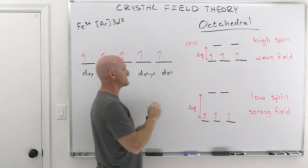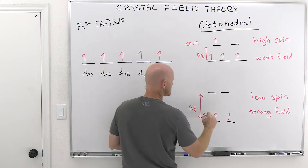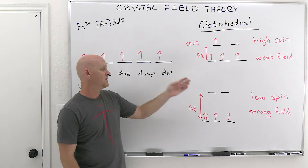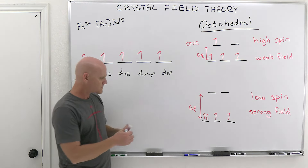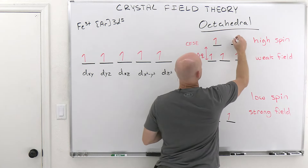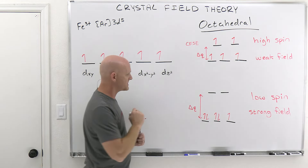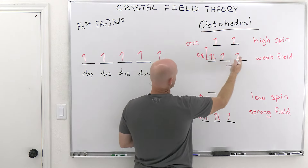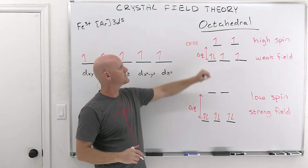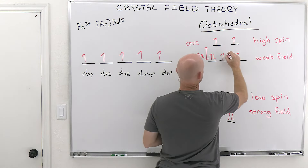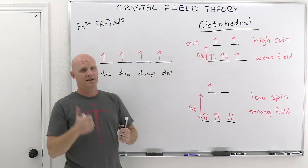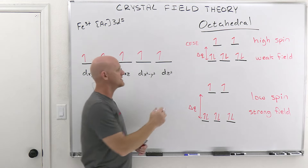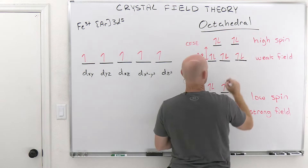It's not until the 4th d electron that you can tell the difference: weak field/high spin places it in the upper set (4 unpaired), while low spin pairs it down low (2 unpaired). At d⁵: 5 unpaired (high spin) vs. 1 unpaired (low spin). At d⁶: 4 unpaired (high spin) vs. 0 unpaired (low spin). At d⁷: 3 unpaired (high spin) vs. 1 unpaired (low spin). At d⁸, d⁹, and d¹⁰, the patterns look identical — you can't distinguish them.